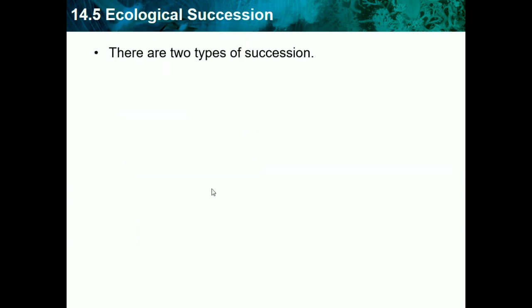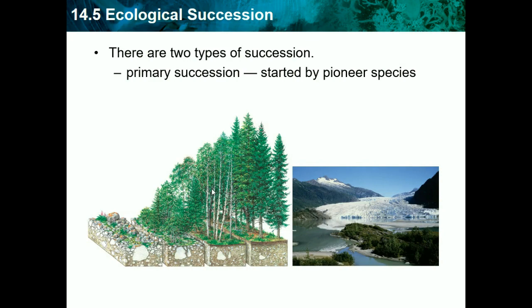There are two types of succession. Primary succession is started by pioneer species — new species that weren't there before. For example, when rocky soil exists with no prior life, pioneer species like small bushes and trees grow from seeds and create a forest. A glacier example shows that once a glacier retreats and exposes rock, a forest might appear over thousands of years.